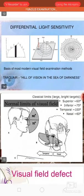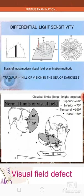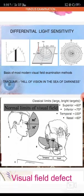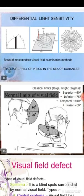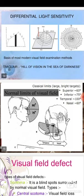The normal limits of the visual field using classical large and bright targets are: superiorly 60 degrees, inferiorly 75 degrees, temporally around 100 degrees, and nasally around 60 degrees.